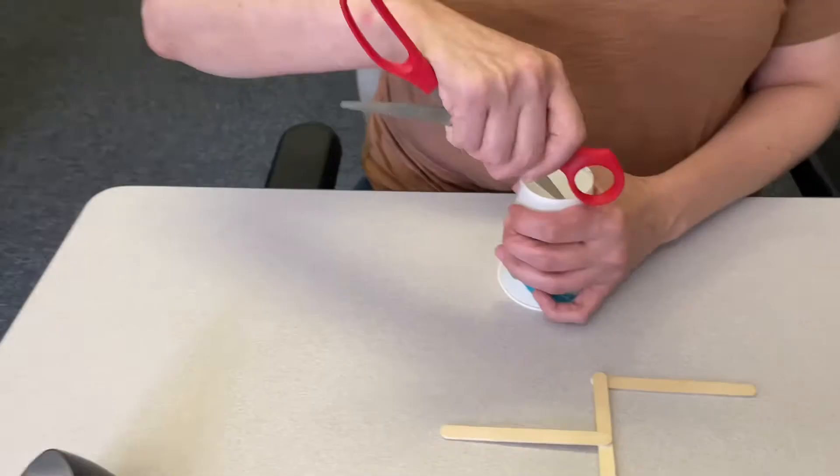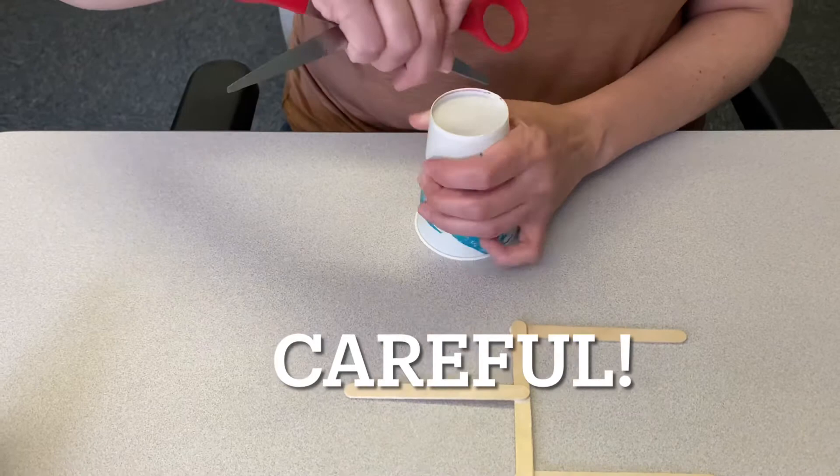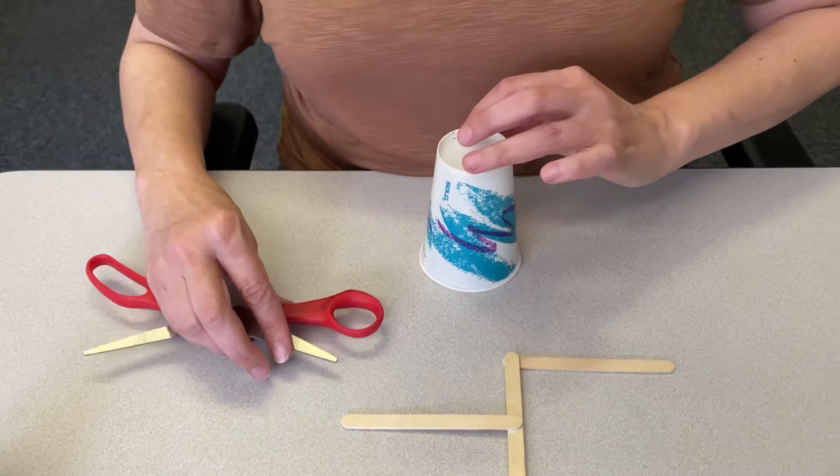While that's drying, we want to take our cup and our scissors. We're just going to create a slight hole right along the base of the cup, right where the seam is. It's just big enough to fit our popsicle stick.